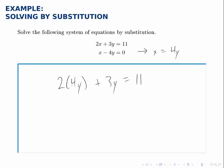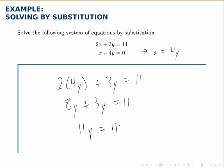Now I can solve this for y. 2 times 4y is 8y and then combining that with the 3y, we get 11y and that equals 11. So y therefore equals 1.